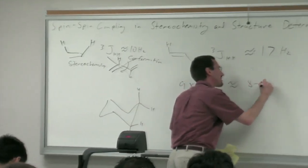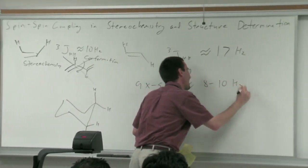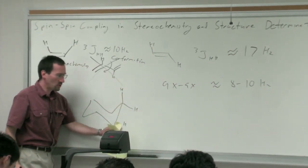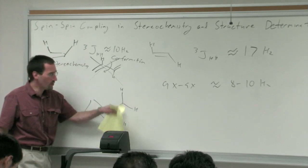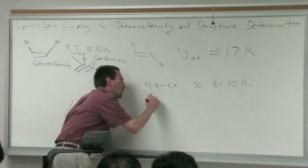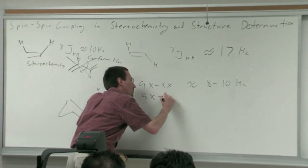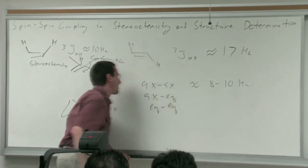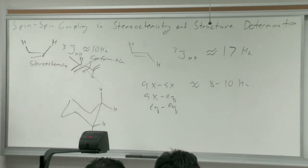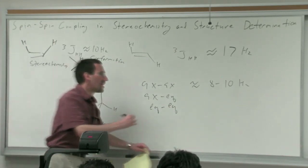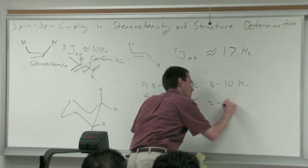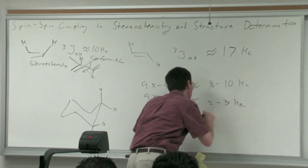Using Newman projections, you can see the 180-degree dihedral angle, and typically you have about 8 to 10 hertz for an axial-axial coupling. If you have an axial-equatorial coupling or an equatorial-equatorial coupling—these are all three-bond couplings—you have a 60-degree dihedral angle, and from the Karplus curve that's about 2 to 3 hertz for each of those.